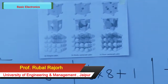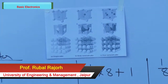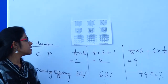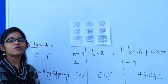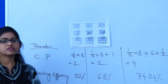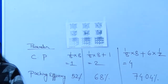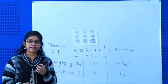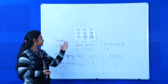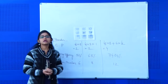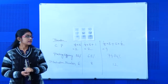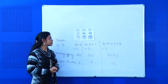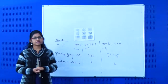We will see the classification of crystalline material. There are three types of crystalline materials: number one, simple cubic; number two, body centered cubic; and number three, face centered cubic. Basically, depending on where the constituent particles are located, we have classified these three divisions.